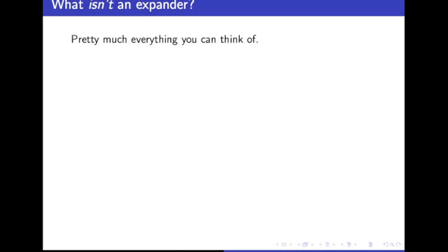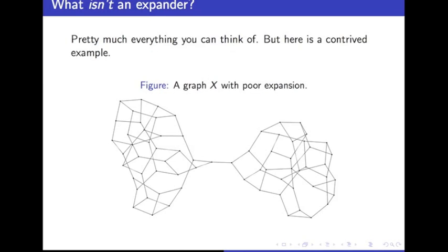But for now, here's a really contrived example of a graph that's not an expander. The two halves of this graph are both, when taken separately, pretty good expanders. But when we consider the graph as a whole, we have very poor expansion.